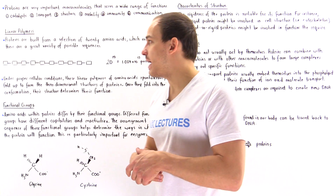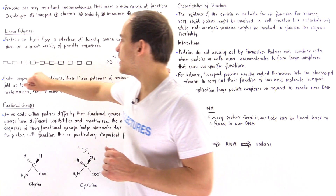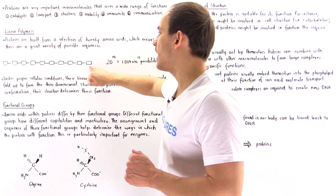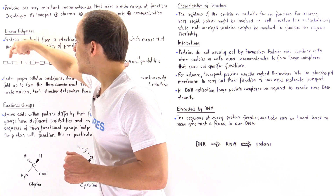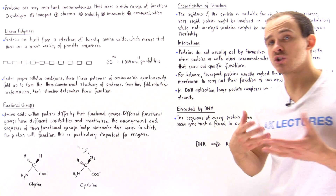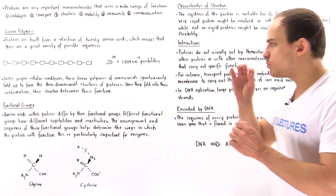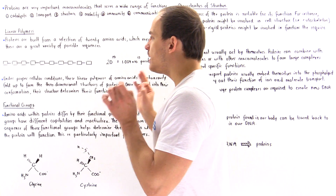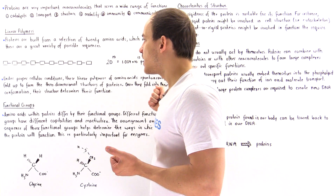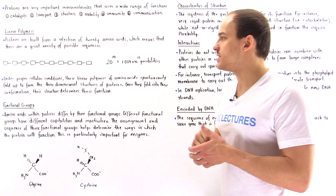The fact that we have 20 different amino acids means we have a great variety of possible sequences for any given protein. To demonstrate this, let's consider a protein that contains only 10 amino acids — amino acid 1, amino acid 2, amino acid 3, all the way to amino acid number 10. These amino acids are held together by covalent bonds known as peptide bonds. The question we want to answer is how many possible sequences are there if each of these 10 amino acids can be any one of those 20 amino acids.